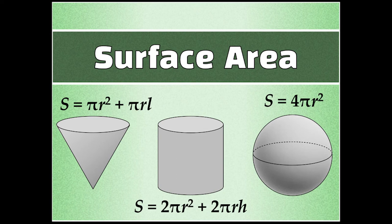Hello again geometry students and welcome to part two of our lesson on surface area. In part one we covered the surface area of prisms and pyramids. Today we're going to be covering the surface area of cylinders, cones, and spheres. I separated the two lessons that way because today's lesson is all going to be incorporating circles. Cylinders have circular bases, cones have circular bases, spheres are three-dimensional circles, whereas prisms and pyramids in the first lesson were based on polygons, not on circles.